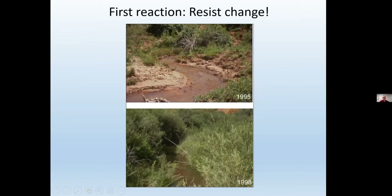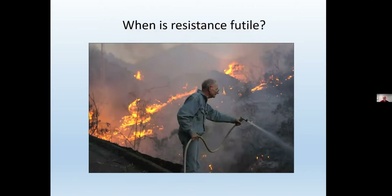Oftentimes, the first reaction is to resist — try to maintain things the way they had been in the past. Here's an example with a stream. If this stream is warming due to climate change, maybe becoming unsuitable for trout, we can try to rehabilitate the riparian zone, add more vegetation, plant trees, keep cattle grazing out, and try to restore it to what had been the historical condition. But at some point, resistance is going to falter if things are changing beyond what we can reasonably expect to reverse. That's where the other two options — accept or direct — become relevant.